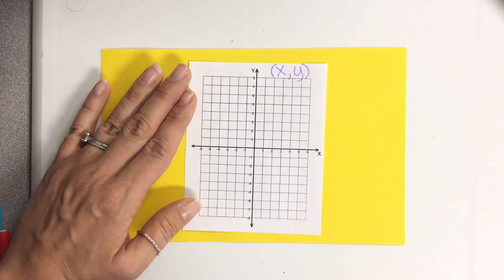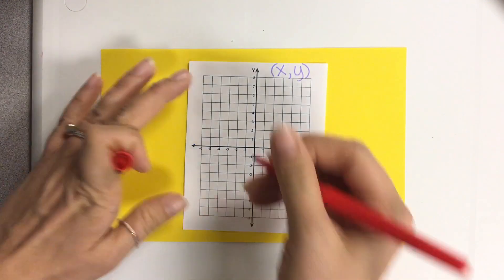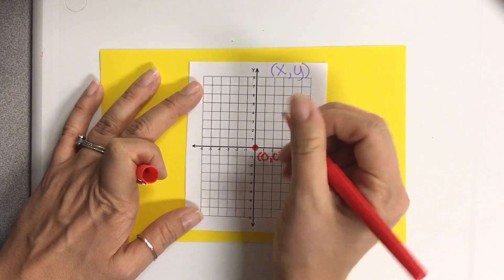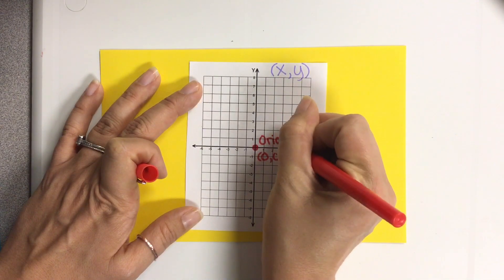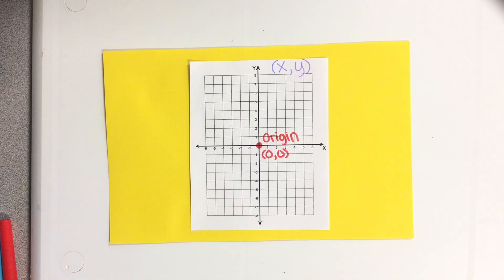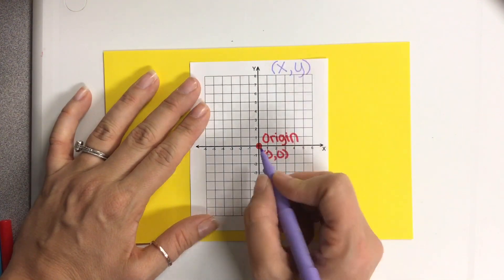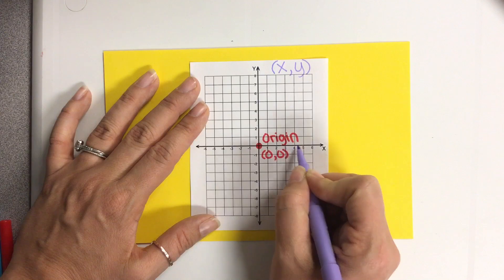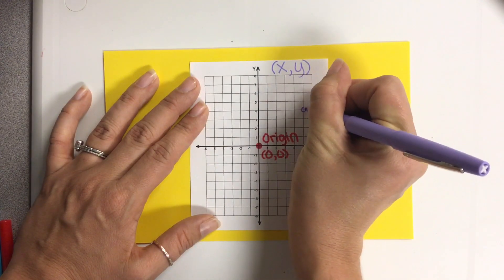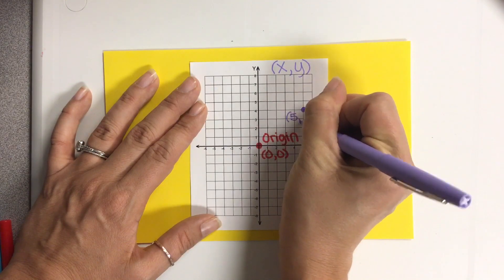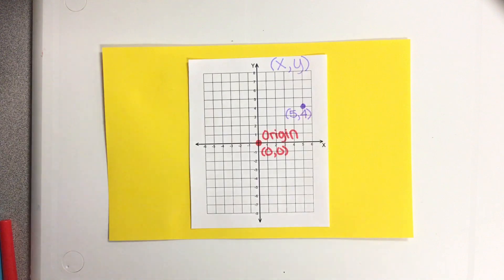You always start at the origin — put a dot right in the middle. This is called the origin and it is at zero, zero. Let's plot a point in quadrant one. If I said plot five, four, the five represents the x and the four represents the y. Go over to five on the x-axis, then up four, and plot your point. Label the ordered pair (5, 4).